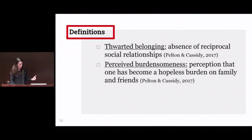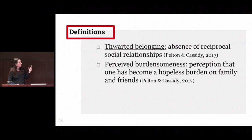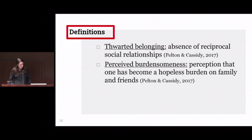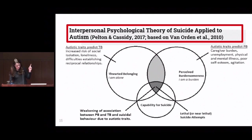Let's get oriented to this model with a couple of definitions. Thwarted belongingness refers to the absence of reciprocal relationships — you don't feel that you belong or you don't actually have the experience of belonging in your social world. Perceived burdensomeness is a perception that a person has become a hopeless burden on their family and friends.